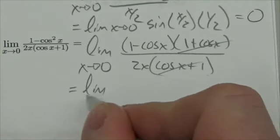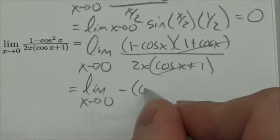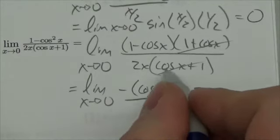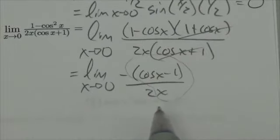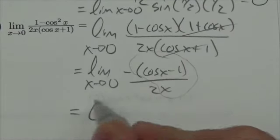If I factor out a negative out of that, I will get negative cos x minus 1 over 2x. Now this part right here is one of those identities we've seen that goes to 0, and so the overall answer here is going to be 0.